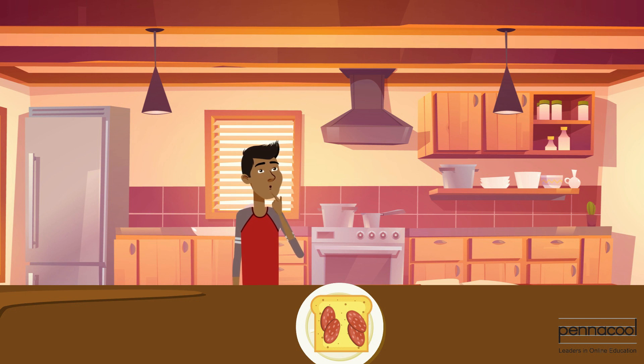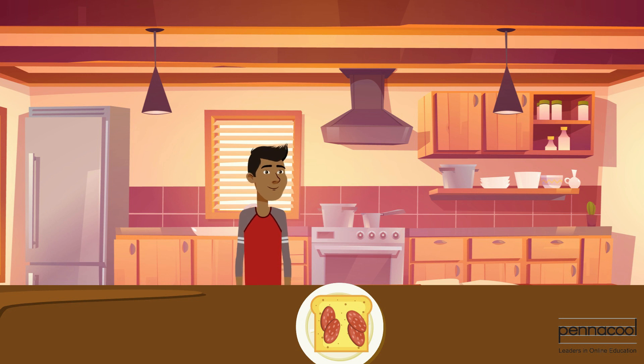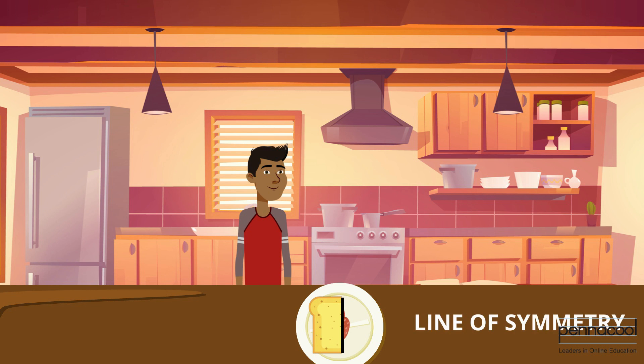This is John. He's in the kitchen making a sandwich. He has one slice of bread left and he has to fold it to complete his sandwich. John notices that his sandwich folds perfectly from one side to the other. This sandwich is folded on something called the line of symmetry.